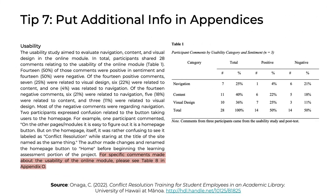Tip 7: Put additional information into appendices. Your projects are complex, and as a result, you're going to have more information than you could possibly include in your results section. You can use your appendices as a backup location for all of the details related to your usability testing. You'll have to make careful decisions about what to include in the main body of your paper. However, if you want to include more detail, simply put that information into an appendix. And if you include something in your appendix, you need to reference that appendix in the relevant section of your narrative, as shown in the highlighted text.